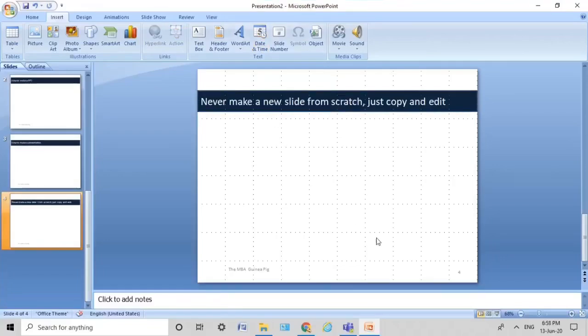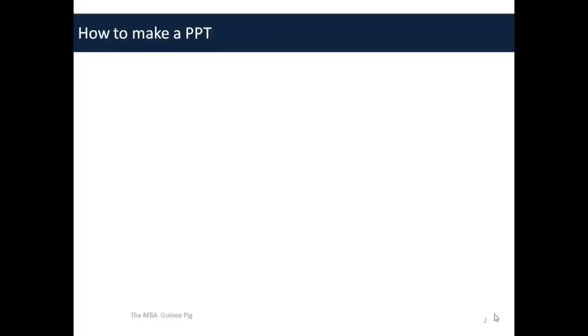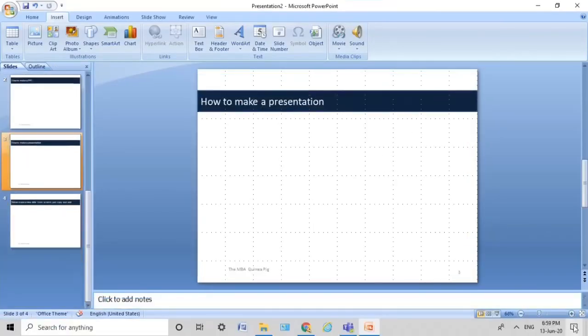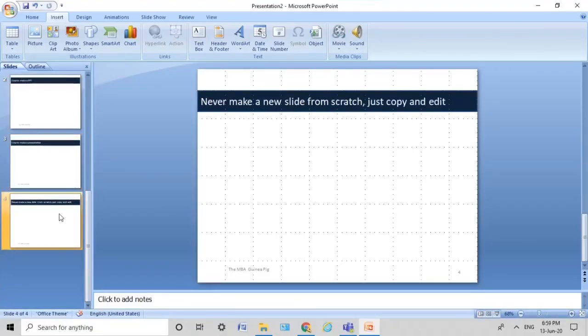Now let's look at it in presentation view. First slide. Second slide — the heading moves. Third slide — you see there was a shift in the title. Fourth slide — it looks so much more professional. The box remains there; just the text changes. This is a very small tip for a professional presentation: never ever insert a new slide once you've already made one slide with your title. Just keep copy-pasting it and keep changing the text in the title slab.